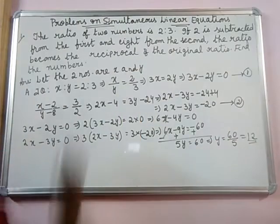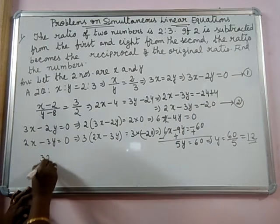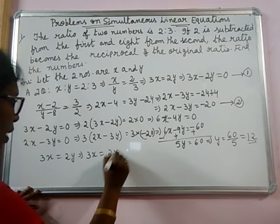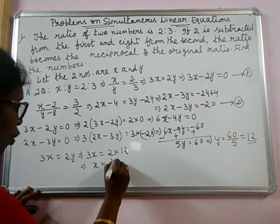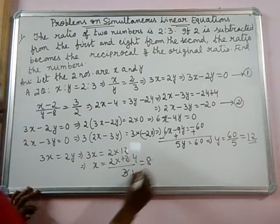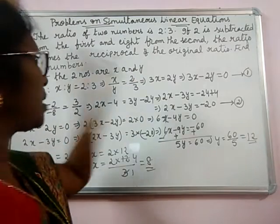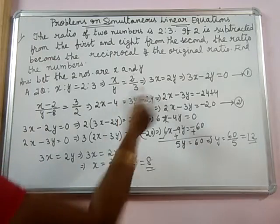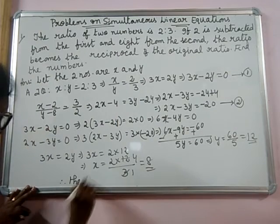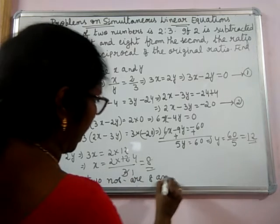The second number is 12. Now let us find x. From the first equation, 3x equals 2y, so 3x equals 2 into 12. That implies x equals 2 into 12 by 3, which gives x equals 8. Therefore, the first number is 8 and the second number is 12. Checking: 8 by 12 gives the ratio 2 to 3. The two numbers are 8 and 12.